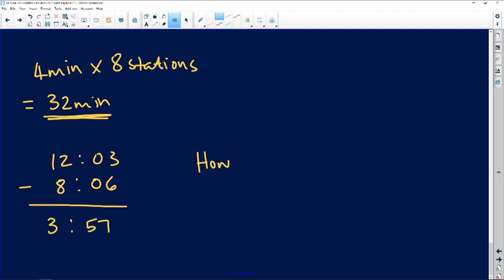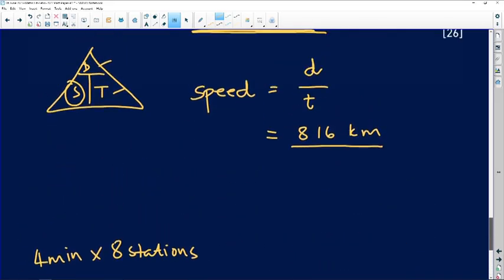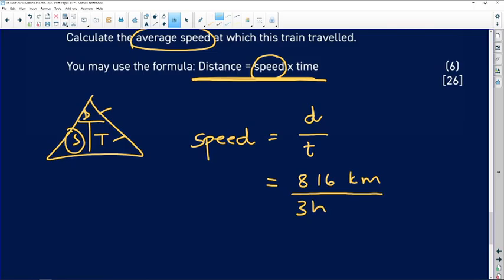That's the time they used. However, we need to subtract the stopping time. So it has to be three hours and 57 minutes minus the 32 minutes that they spent stopping at their stops, which gives you three hours and 25 minutes. So now I've got my time: three hours and 25 minutes that was spent on the road.